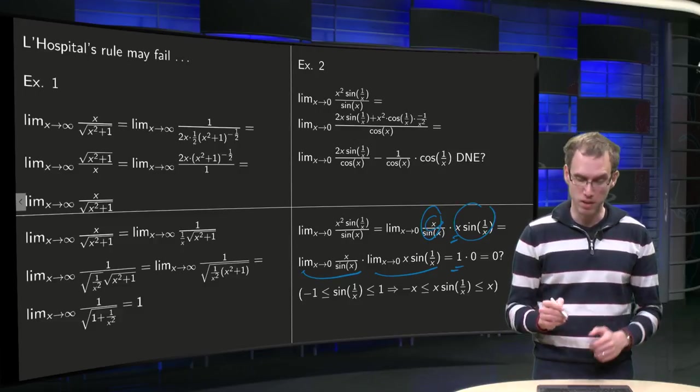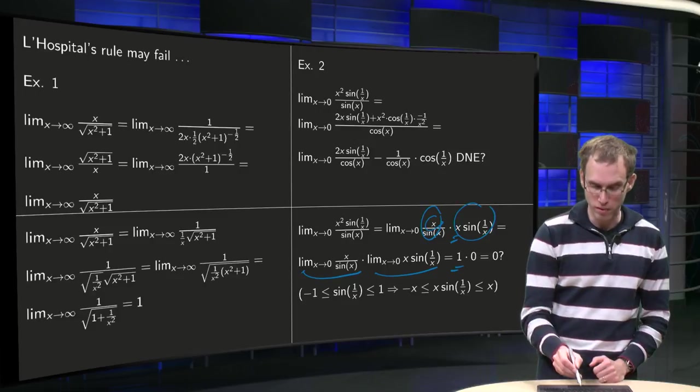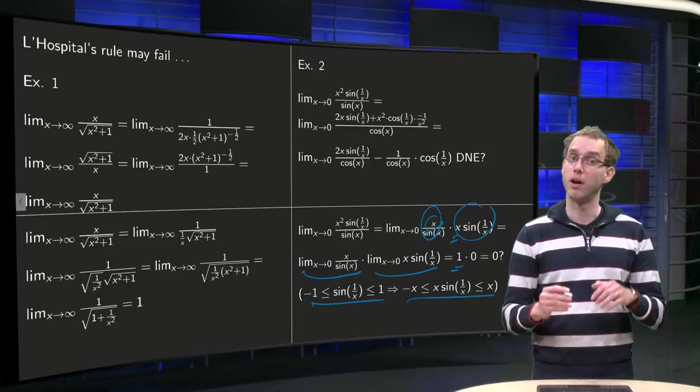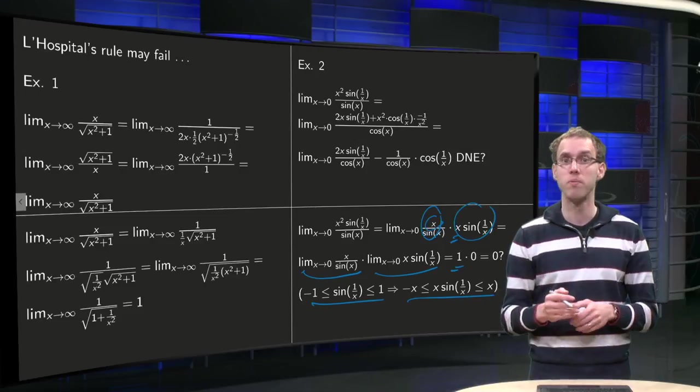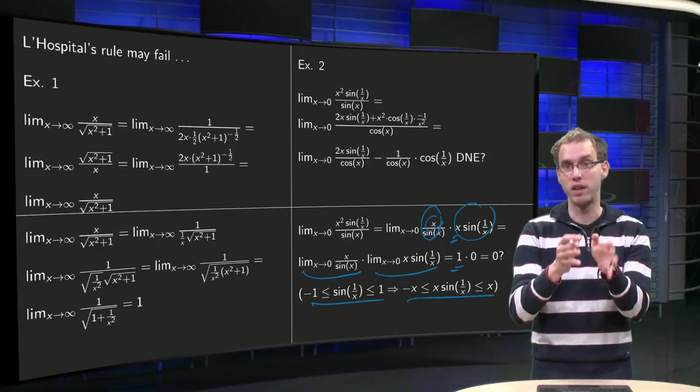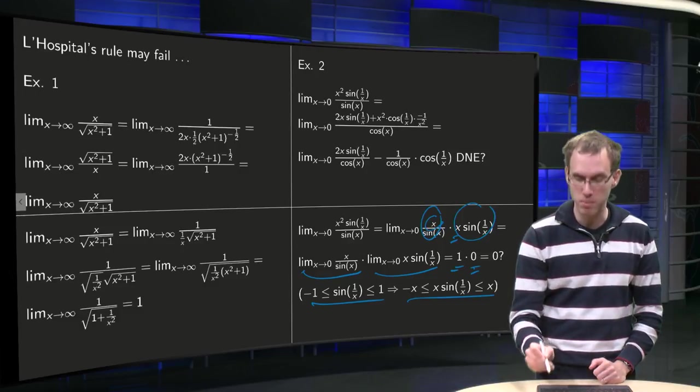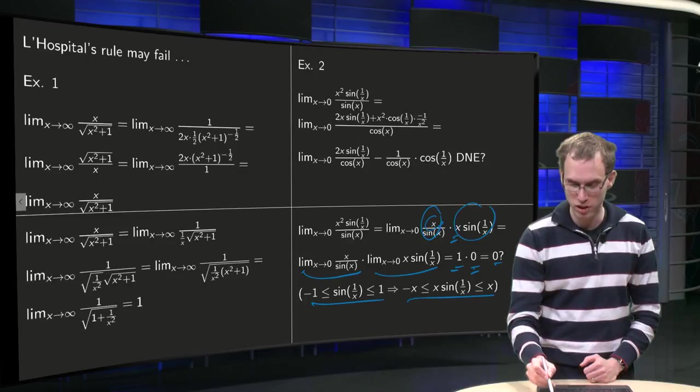And the other one, x times sin 1 over x: sin of 1 over x is bound between minus 1 and 1, so we can squeeze this one between minus x and x, x to 0. X sin 1 over x equals 0 in the limit, so we get 0 for that limit, so we get that 1 times 0 equals 0.